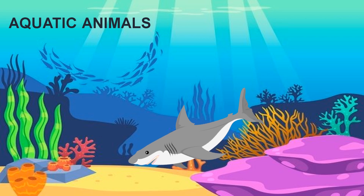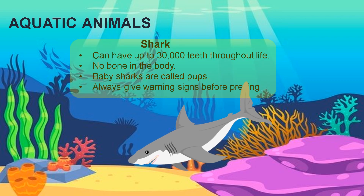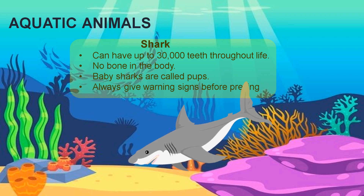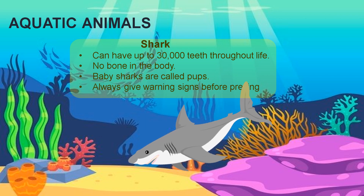It's a shark — oh, I'm scared, are you too? Sharks can have up to 30,000 teeth throughout their life, and there are no bones in their body. Baby sharks are called pups, and they always give warning signs before preying. So there would be so many of them, but you guys need to be really cautious while you dive in some oceans.